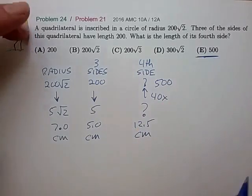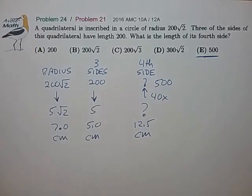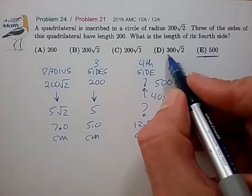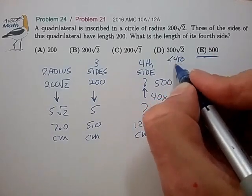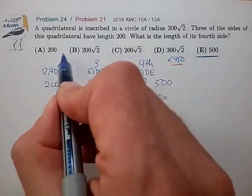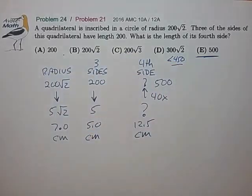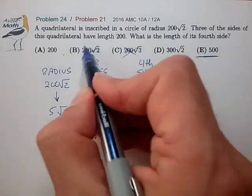So it seems like E is our probable answer. But we have to take a glance at some of the other choices just to make the best selection. And what we notice is that 300 root 2 is a little bit less than 450. And all the other choices, of course, are much less than 450. So we don't need to really consider choices A, B, and C.